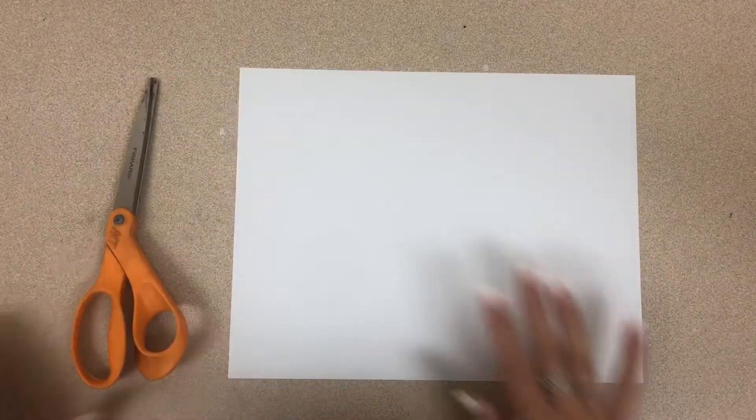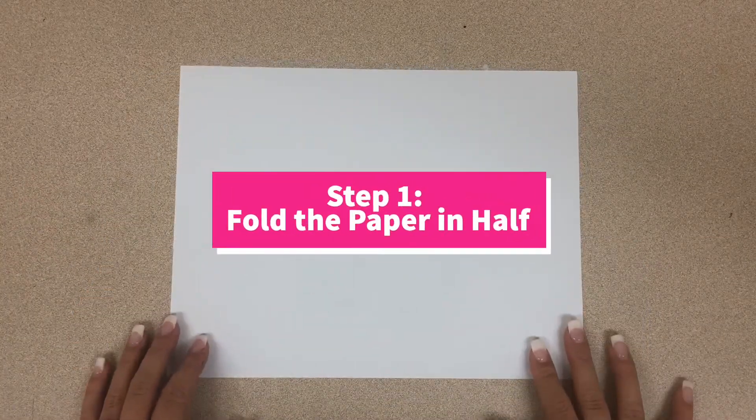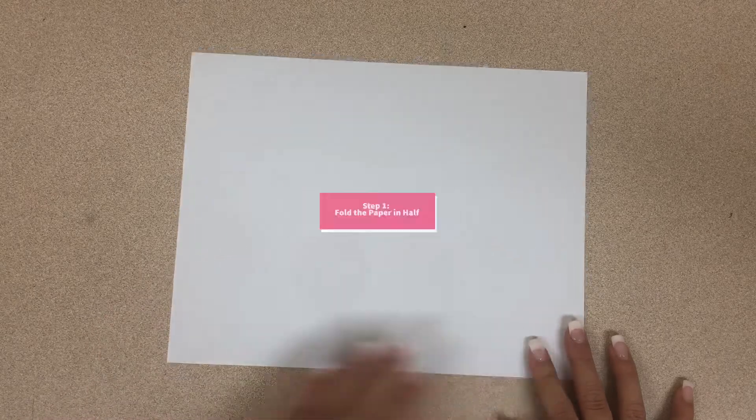The first thing you need to do is fold the paper in half hamburger style or vertically. I'm going to turn my paper longways. The best way to fold paper is by bringing the far end to you and matching up those two corners.